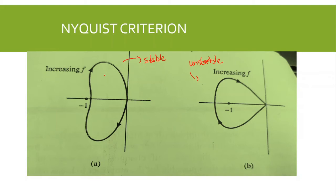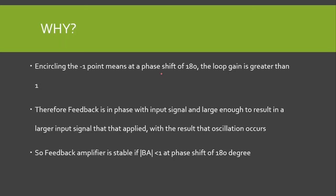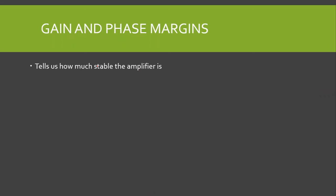Why is this so? Encircling the minus-one point means that at a phase shift of 180 degrees, the loop gain is greater than one. Therefore, the feedback is in phase with the input signal and large enough to result in a larger input signal than that applied, which may result in oscillation. For the feedback amplifier to be stable, the magnitude of the loop gain should be less than one at a phase shift of 180 degrees. Encircling the minus-one point means loop gain is greater than or equal to one at 180 degrees, causing positive feedback and possible oscillations.